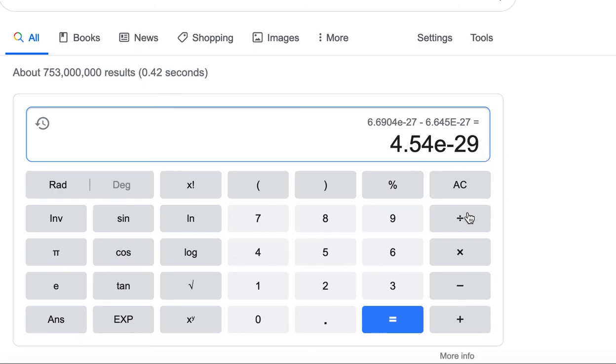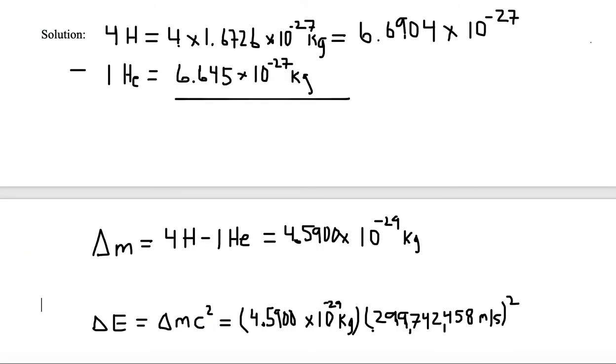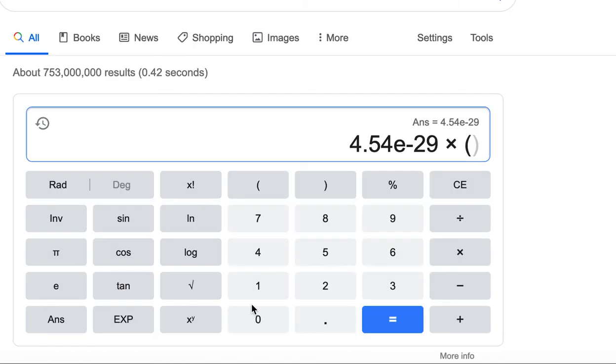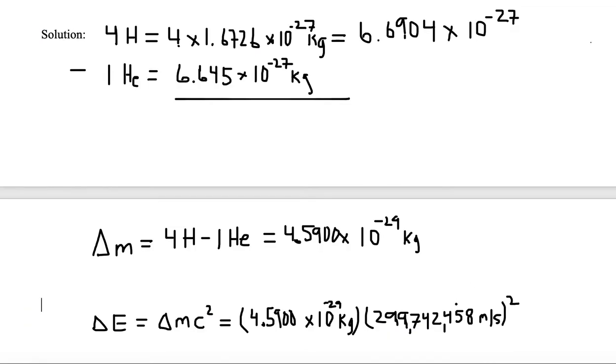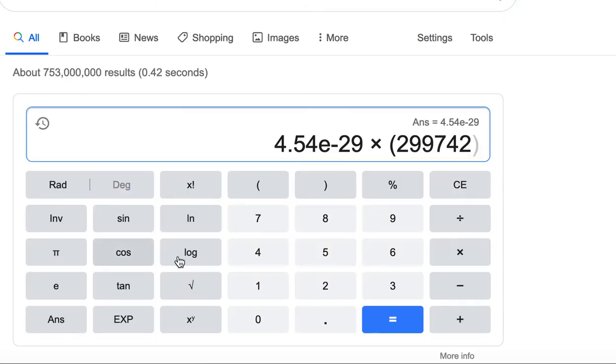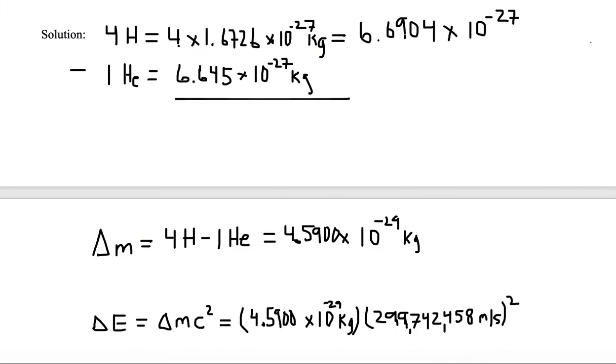So let's confirm that's in there, 4.59E minus 29th. We want to multiply it in a parentheses because we need to square something. So 299,742, and our last three digits are 458. X to the Y, square it, and we need to close the parentheses. So there's our delta M. Here's our C squared. Our end result is 4.08 times 10 to the minus 12.